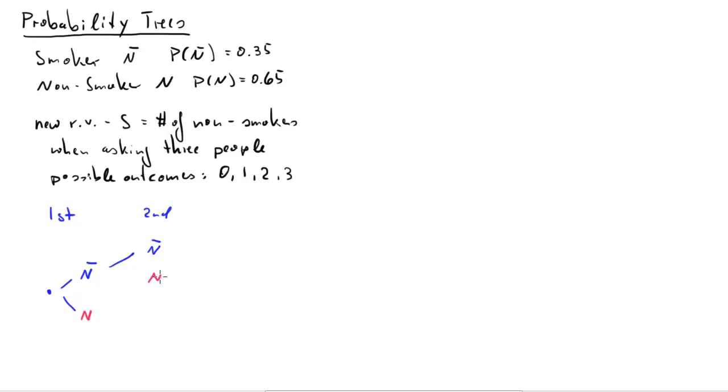then if we draw the second respondent, that one will be either a smoker n bar or a non-smoker. But the same, if the first one was a non-smoker, if it was an n, then the second one will be either a smoker n bar or a non-smoker.